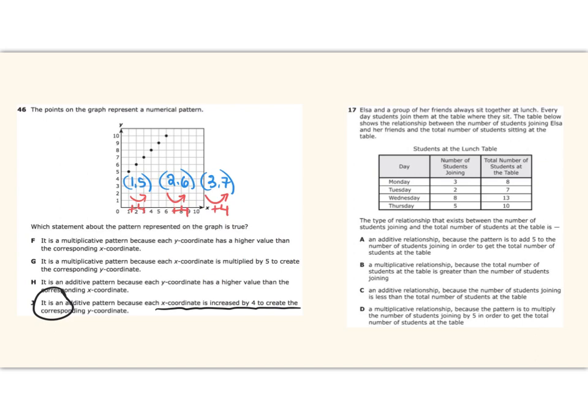How could I get from 3 to 8 using addition? I could add 5. Does that work for the next row? Yes, 2 plus 5 is 7. 8 plus 5 is 13. Okay, so this is an additive relationship. 5 plus 5 is 10. So I now know that what's happening is that the number of students joining plus 5 is the total number of students at the table. So this is not a multiplicative relationship, it is an additive relationship.